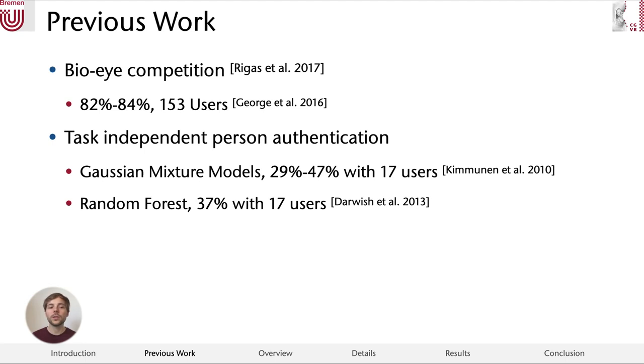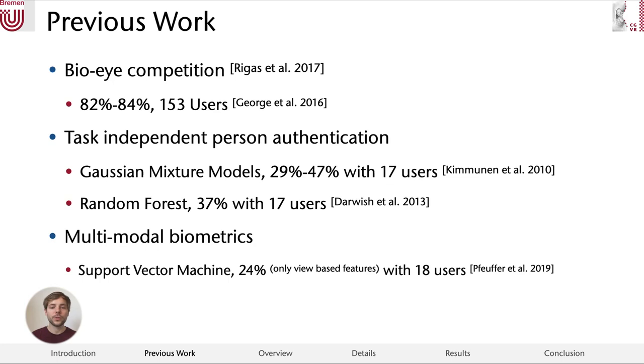A last area is multimodal biometrics. Here, for example, in the work by Pfeiffer et al. from 2019, 18 users were recorded and not only their gaze patterns but also their head movements and typing behaviors were used to differentiate between them with a support vector machine. With only the view-based features, an accuracy of 24 percent was achieved. As we can see, in previous works, the evaluation was either very task-dependent or the number of users in the studies was quite small.